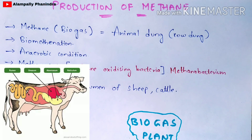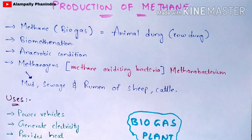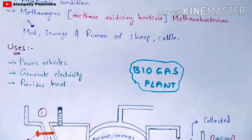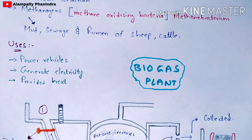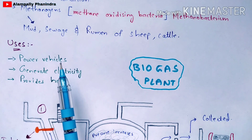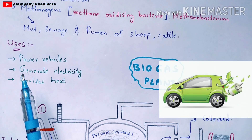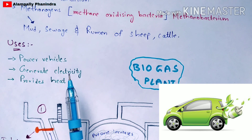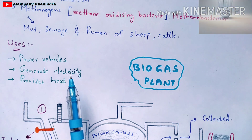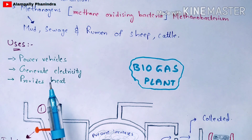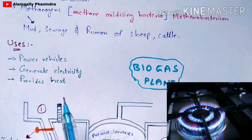Now let us see some uses of methane gas. Methane is used to power vehicles, to generate electricity, and to provide heat.